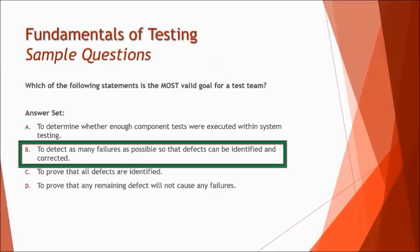Option C — to prove that all defects are identified — is wrong because at no point in time can you claim you have found all defects; if you keep testing, you may find more. The four objectives of testing are: prevent defects, find defects, provide information for decision making, and build confidence. Option D — to prove remaining defects will not cause failures — is also invalid because without knowing about a defect, you cannot make statements about whether it will cause failures. So the right answer is B.